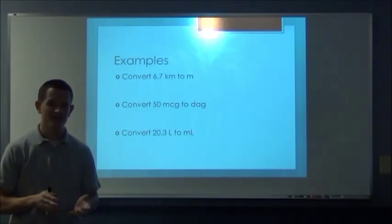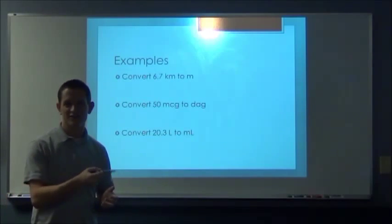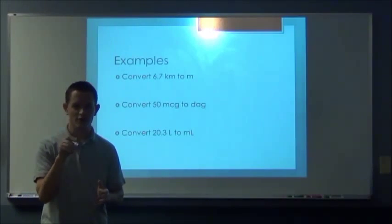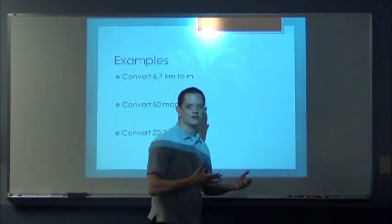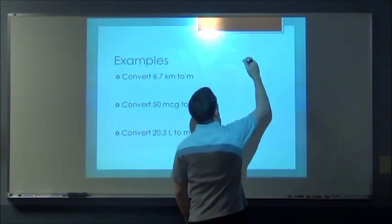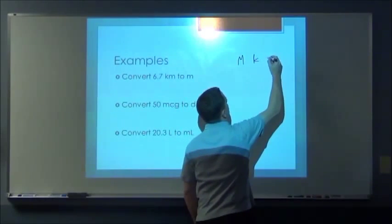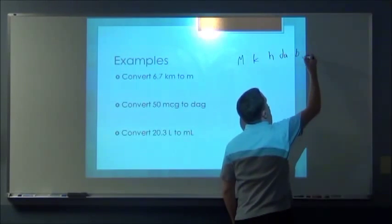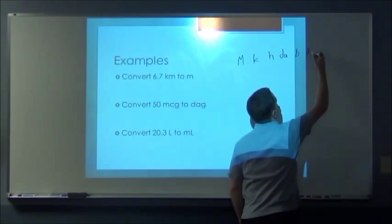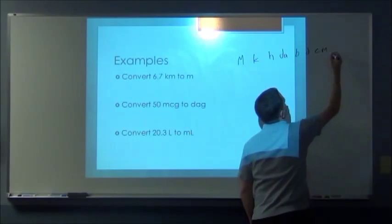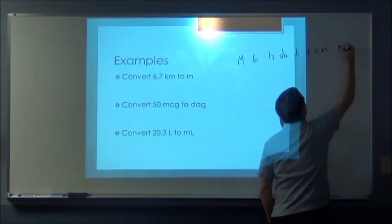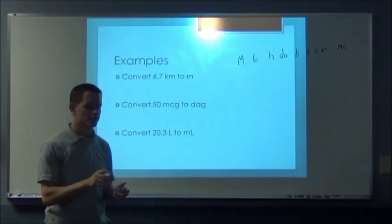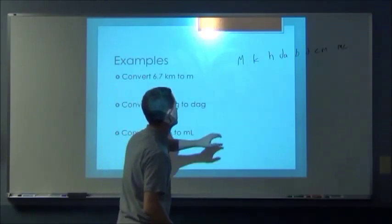Alright, now when you're converting in the metric system, all you have to do is adjust the decimal and what you can do is use an acrostic to kind of remember all the prefixes. And with some adjusting I came up with Mighty King Henry died by drinking chocolate milk at McDonald's. And in between the first one and the last one there's two spaces.